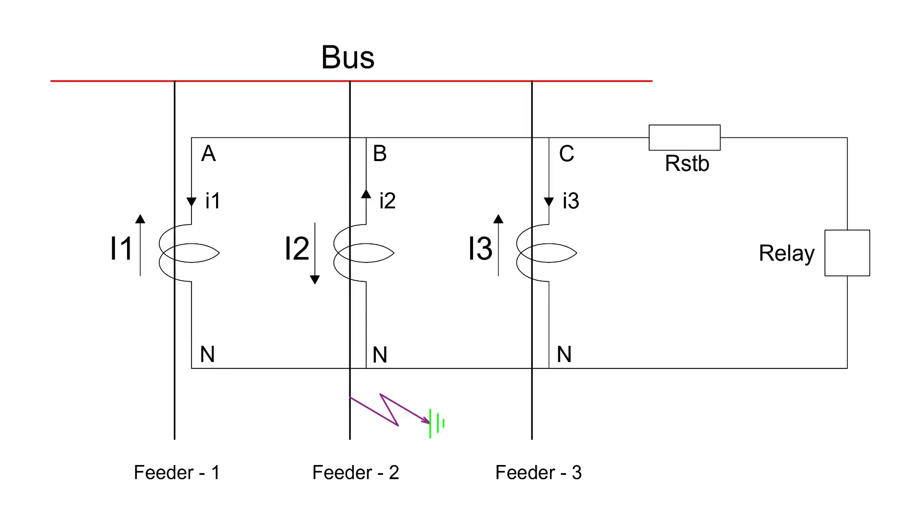Now let's consider a through fault, which is a fault occurring outside the protection zone. Suppose a fault occurs after the CT of any feeder. Ideally, if all CTs maintain the same nominal ratio for all external faults, no current will flow in the relay coil. However, in practical cases, the relay may falsely operate due to a reduction in the nominal ratio of the fault CT resulting from CT core saturation. This false differential current can trip the relay incorrectly.